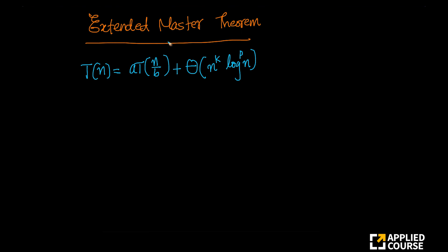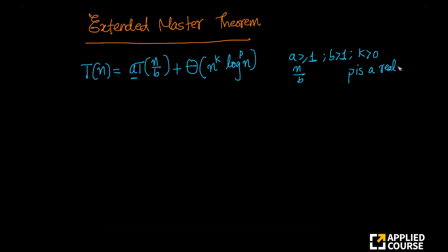This differs from the traditional Master's Theorem in the log^p(n) part. There are some rules: A must be greater than or equal to 1. A tells us how many sub-problems we are breaking the larger problem into, and n/b tells us the size of each sub-problem. B must be greater than 1. We also have two more variables k and p, where k must be greater than 0 and p is a real-valued number.